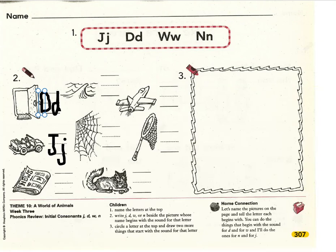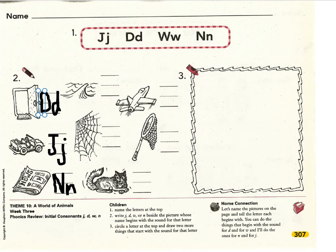Next, I see a newspaper. What sound do you hear at the start of newspaper? I hear N. What letter makes the sound N? N. N says N. Please write a capital N and a lowercase n on the handwriting line. Make sure your capital N reaches all the way from the hat to the shoe, and your lowercase n only goes from the belt to the shoe.